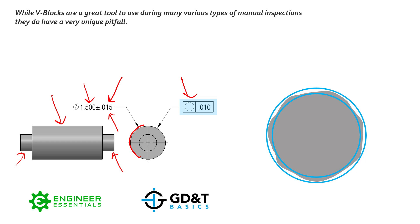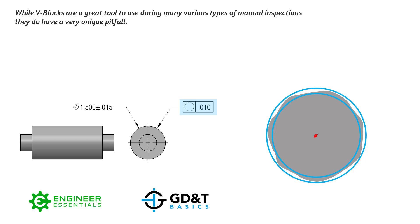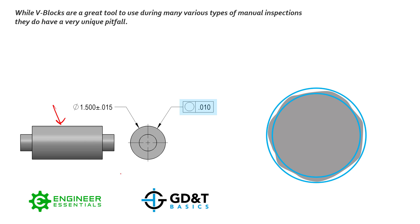We're controlling this large outside diameter to a circularity of 10 thousandths. What that means theoretically is: from the central axis of this outside diameter, what's the radial difference from the highest point to the lowest point? That's the difference between these two values. As long as that radial distance is less than 10 thousandths, we've met our circularity spec. If it's more than that, we've failed.